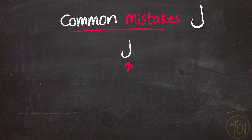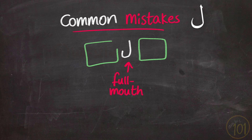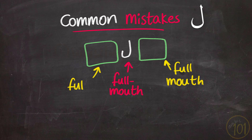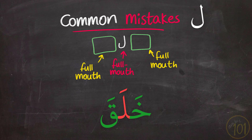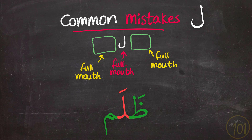The second mistake is pronouncing Laam as full mouth when it is surrounded by full mouth letters. Learners fail to switch between full mouth and empty mouth and back to full mouth. For example, when the Ha and Qaf are full mouth, the Laam should remain empty mouth, switching from full to empty and then back to full. This problem can also occur when Laam is preceded by a full mouth letter.